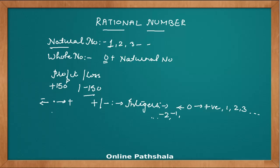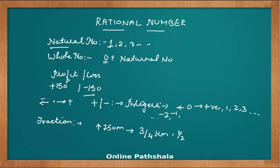We have also learned about fractions. For example, if you want to represent that a particular place is 750 meters above sea level, we can represent it as 3 by 4 kilometers above sea level. A fraction like 3 by 4 has a positive numerator, a positive denominator, and the denominator is not equal to 0. So we have fractional numbers as well.